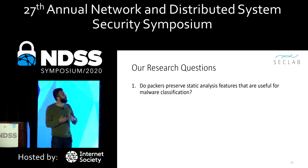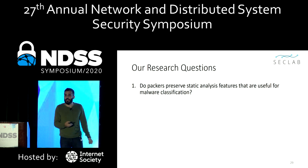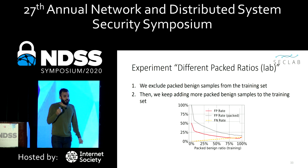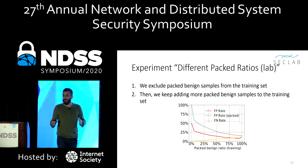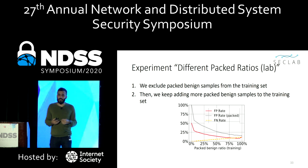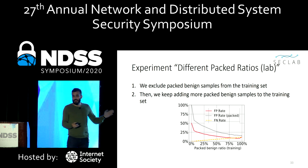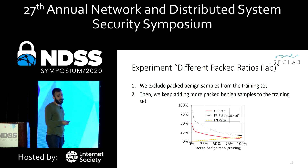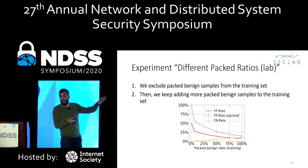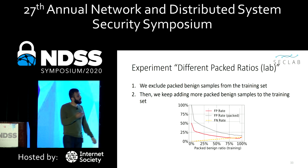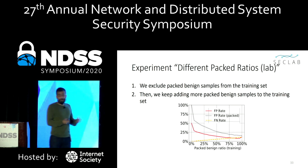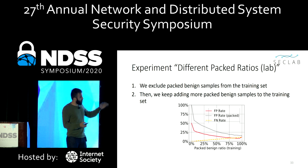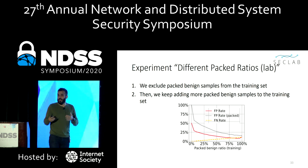We also extracted nine different feature categories that are shown to be useful for malware classification in both industry and academia, especially in the case of packing. Now let's return to our research questions. The first question we want to answer is: do packers preserve static analysis features that are useful for malware classification or not? To answer that, we first excluded packed benign samples from the training set, so the only packed samples in training were malicious. Then we kept adding more packed benign samples to the training set to see how the classifier performs. We always evaluated the classifier on a fixed test set that has both packed benign and not-packed benign samples. At the beginning, when there were no packed benign samples in the training set, the false positive rate for packed executables in the test set was around 100%. This clearly shows that the classifier learned packing is a sign of maliciousness.